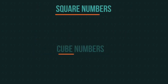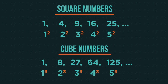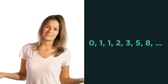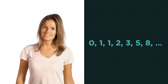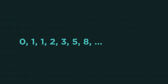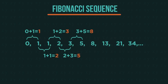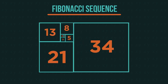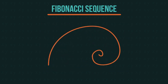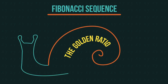Square numbers and cube numbers are also special sequences. This special sequence — can you find the next three terms? Did you get 13, 21 and 34? This is called the Fibonacci sequence. You just add up the two numbers before to get the next term. If you make squares of Fibonacci sizes, you get a spiral.